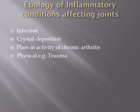The etiology may also be a flaring reactivation of a chronic arthritis — an acute attack on top of an already existing chronic condition. Finally, it might be physical, such as trauma, which can also cause inflammation. So inflammation does not require an organism; it can be physical, a flaring reactivation, or due to crystal deposition.